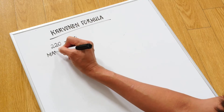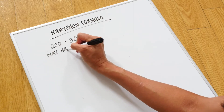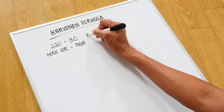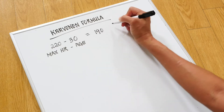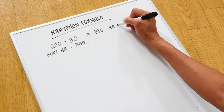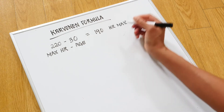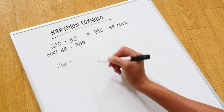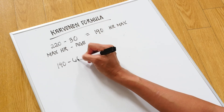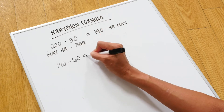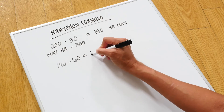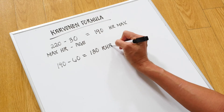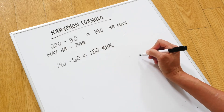My age is 30, which gives us 190 for our heart rate max. Now, taking our heart rate max of 190, we're going to subtract our current resting heart rate, which for my age should be around 60. That gives us 130 as the lower end of our training zone.